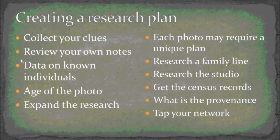Each photo, depending on the clues that you found, may have its own research plan. So if it's got architecture, you're going to do research around architecture. If it's got a unique gun in it because it's a post-Civil War photo, you're going to do research on guns. If you get a particular individual, research their entire family line — not just immediate, but go broad. If it's got the studio on it, research everything you can about the studio.